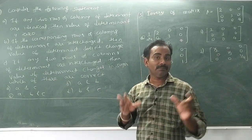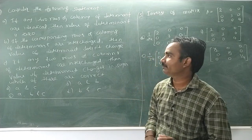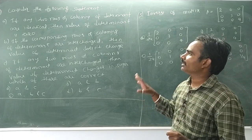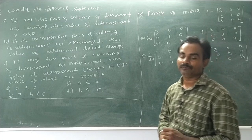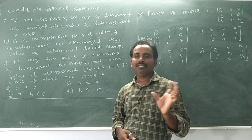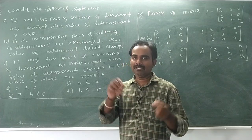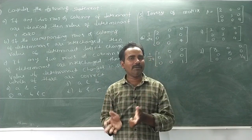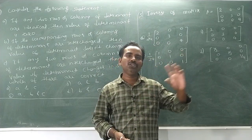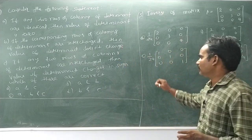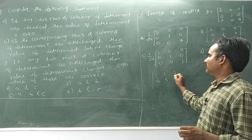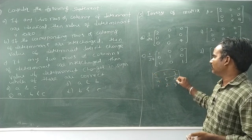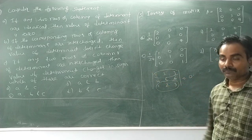If any two rows or columns of a determinant are identical, then the value of the determinant is zero. That's right. When the elements in rows are the same or columns are the same, the determinant value equals zero. For example, with rows 1, 2, 3 and 4, 5, 6 and 1, 2, 3 repeated, if row 1 equals row 3, the determinant is zero.